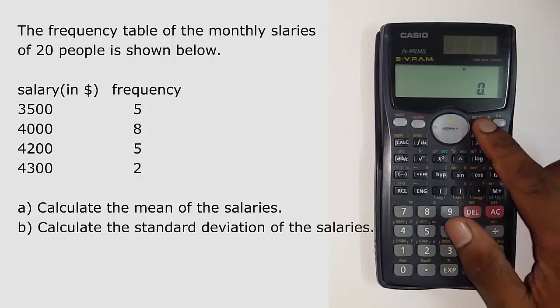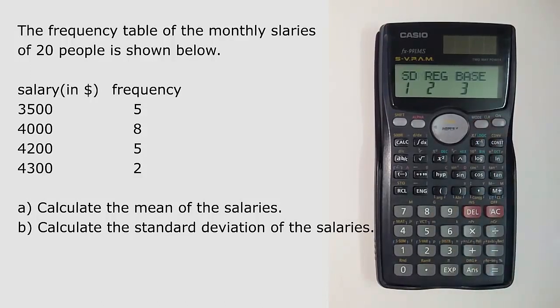Click the mode button two times. Select number 1 for standard deviation. This sets the calculator to standard deviation mode and a small standard deviation icon will appear on the top center part of the calculator.